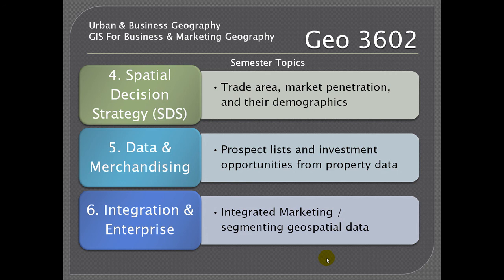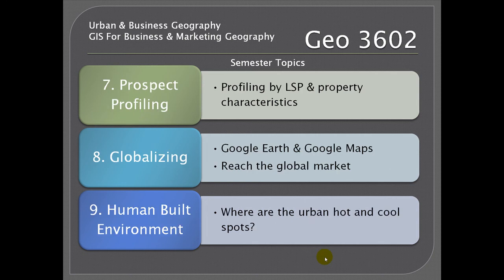We will learn how to generate prospect lists and identify investment opportunities from property data. The sixth topic is the enterprise solution — we will look at integrated marketing and segmenting geospatial data. Seventh is profiling our customers by lifestyle segmentation profiles and their property characteristics. We will spend a fair amount of time on the property assessment data files, which most counties in the United States, and increasingly the world, have available.